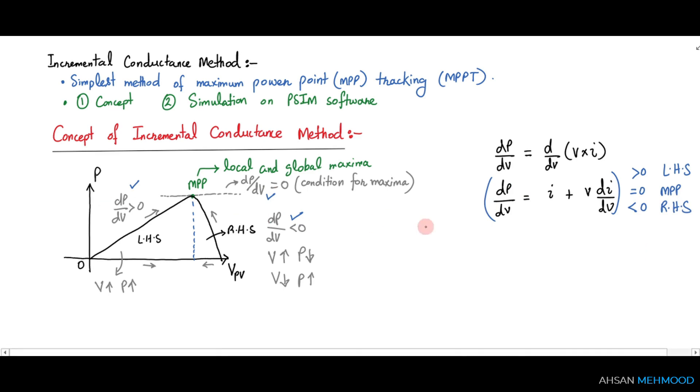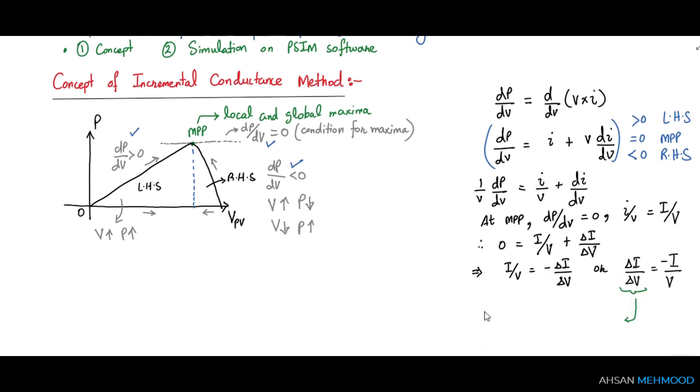If I divide the whole equation by v, then what I get is 1/v times dp/dv equal to i/v plus di/dv. The term delta i by delta v is called the incremental conductance. That's where the name of this method comes from.